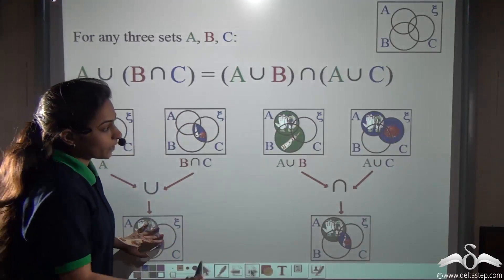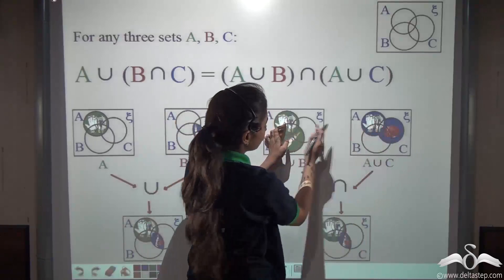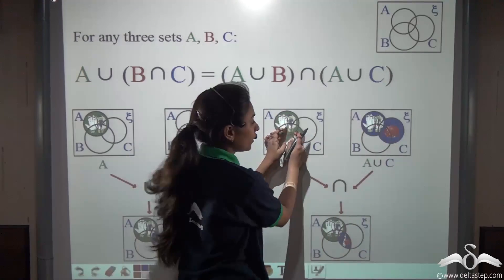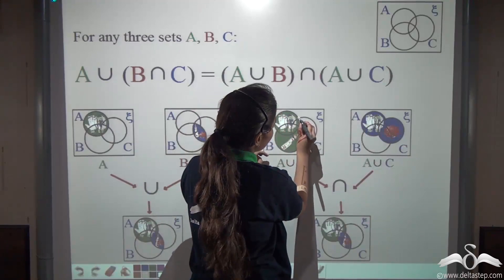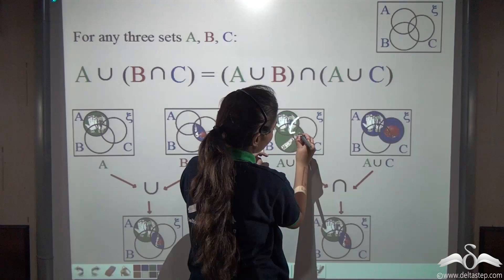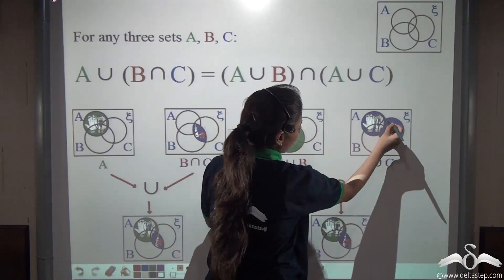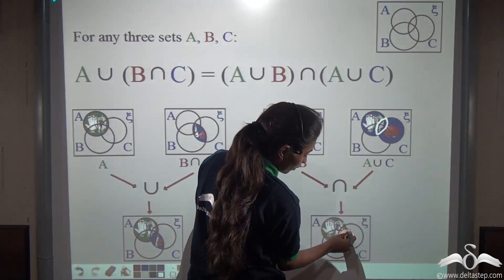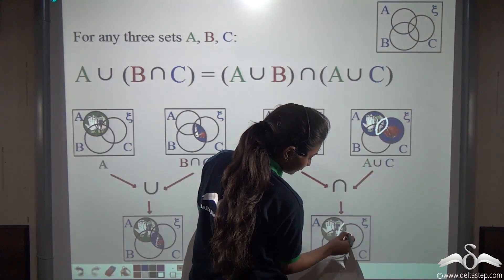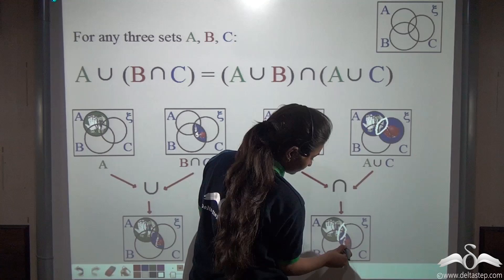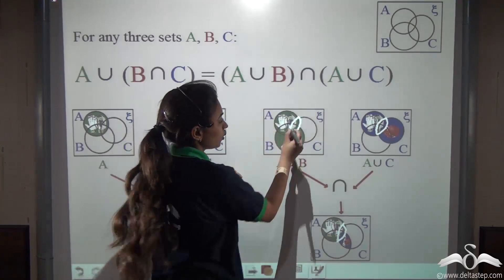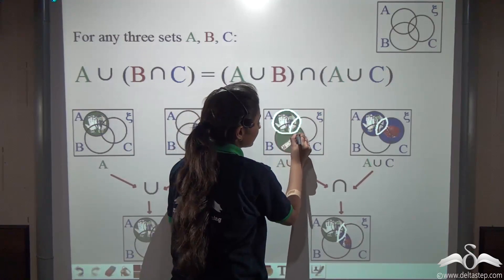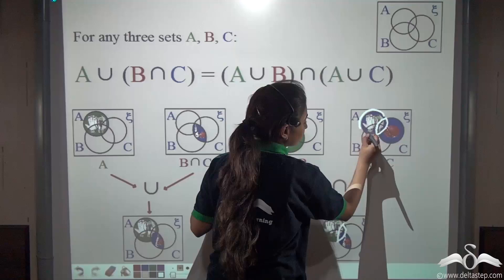What will be the intersection of these two? Intersection means common in both. You can see that this part is common in both, so we have drawn this part. What more is common? You can say that set A itself is common in both.